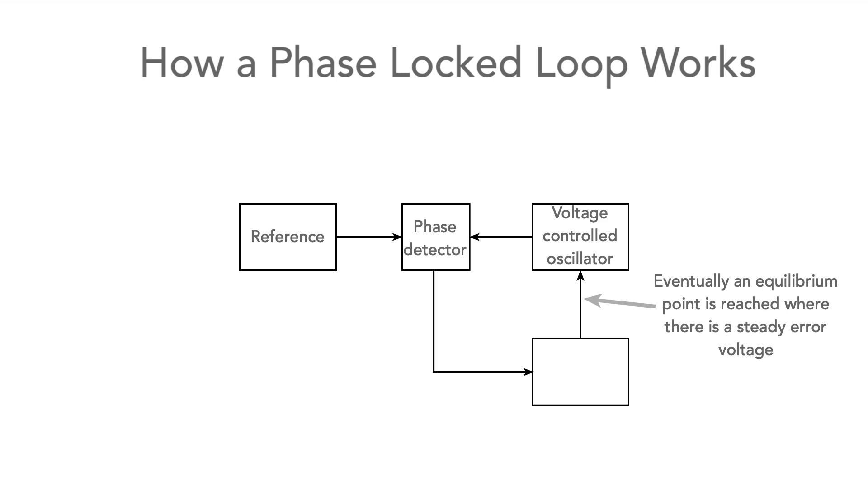Eventually a point will be reached where the error voltage is steady, and this means there is a constant phase difference between the reference oscillator frequency and that of the VCO. In turn, this means that the reference oscillator and the VCO are on exactly the same frequency, and the loop is in lock.